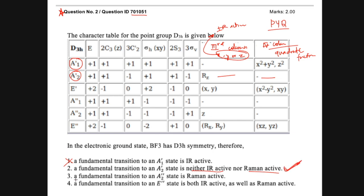Option 3 says a fundamental transition to A2-double-dash state is Raman active. Checking A2-double-dash — there is no quadratic function, so it is Raman inactive. That is a wrong statement. Option 4 says E-double-dash is both IR active and Raman active. But E-double-dash has no X, Y, or Z, so it is IR inactive, and no quadratic function, so it is also Raman inactive. That is also an incorrect statement.